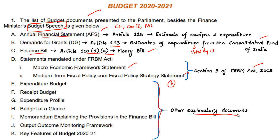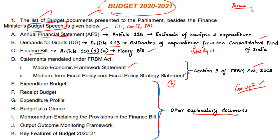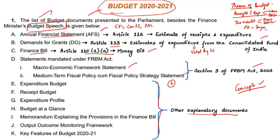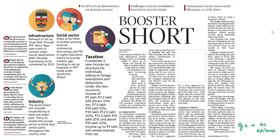These are the basic concepts about the general budget that you need to know from an exam point of view. We also saw what budget documents are presented when the budget is presented in parliament. With this background in mind, let us now see all the news articles and editorials regarding the Union Budget. Today's plan is to first see the theme of the Union Budget as presented by the Finance Minister, then the expenditures and receipts, then tax-related revenues, then the fiscal deficit target, and finally two editorials with the authors' comments.